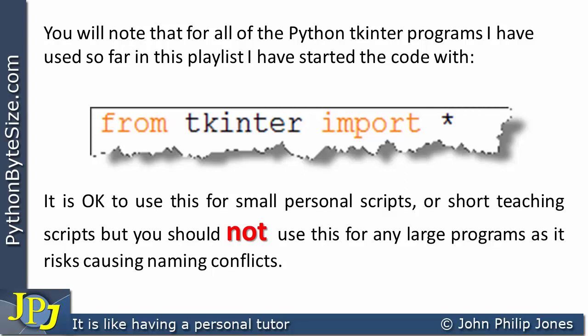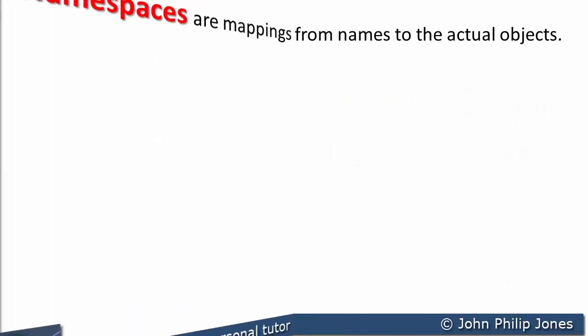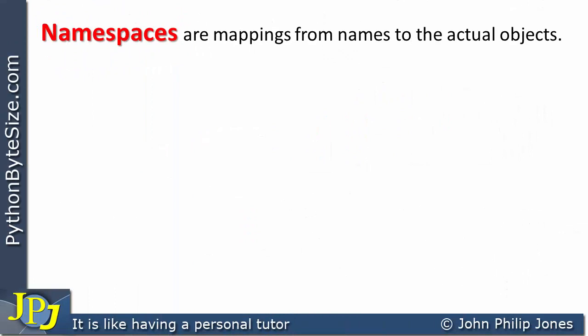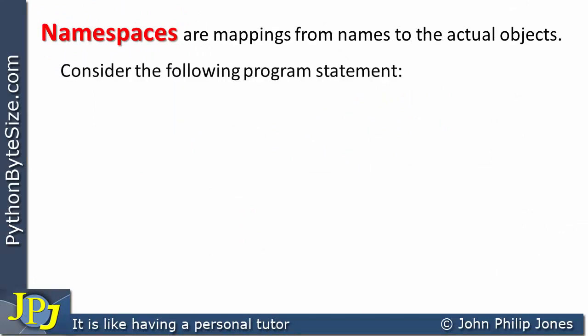Before I move on to show an example of a naming conflict, I'd like to take a side step and look at what are called namespaces in Python. Namespaces are mappings from names to actual objects. Consider the following program statement.